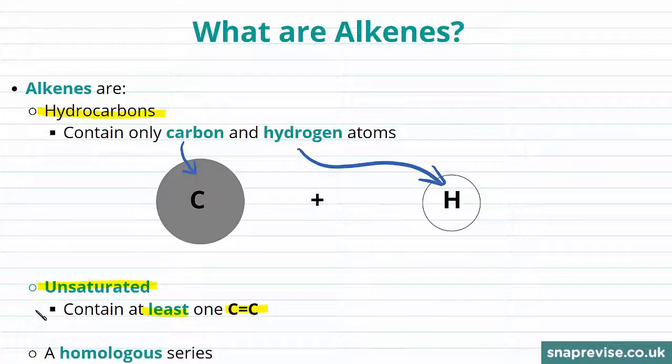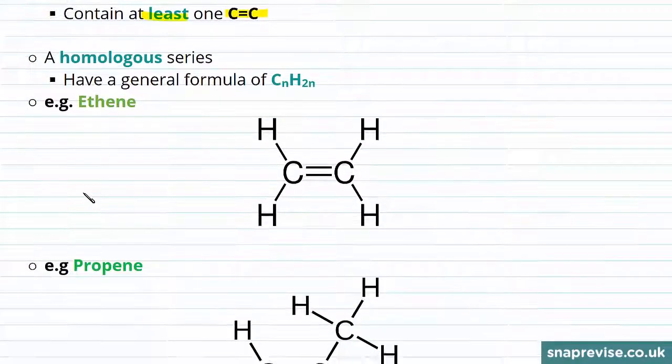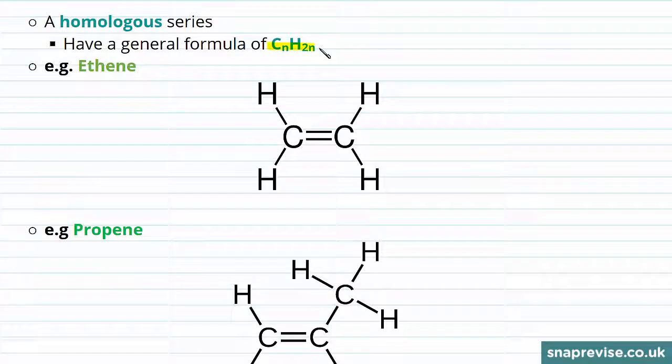Alkenes form a homologous series and they have a general formula of CnH2n, where n represents the number of carbon atoms in our molecule. So if we take a look at some of our alkenes, we can look at their structure and take a look at their formula.